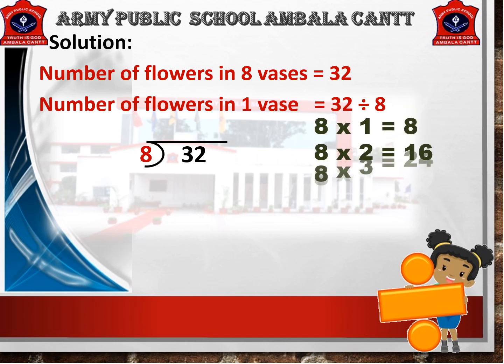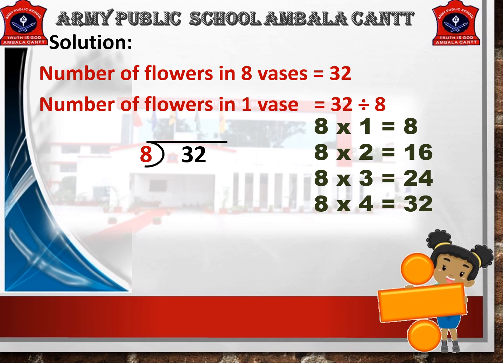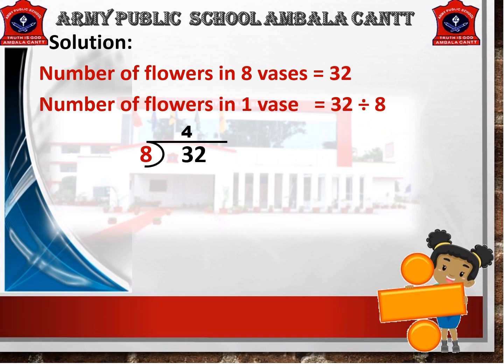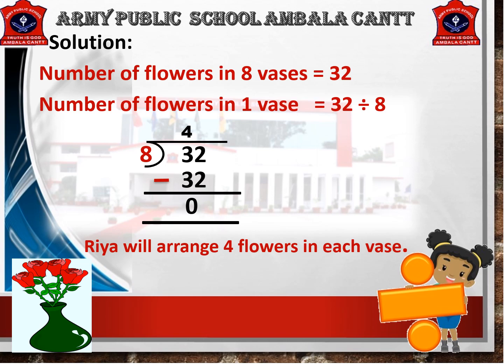We all know that 8 times 4 is 32. So, write 4 above the horizontal line and subtract 32 from 32. 32 minus 32 is equal to 0. Therefore, Rhea will arrange 4 flowers in each vase.